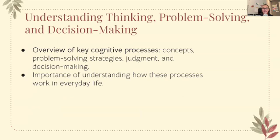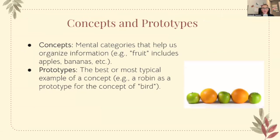We're going to start off with concepts and prototypes. Concepts are mental categories that help us organize information — for example, fruit includes apples, bananas, and oranges. Prototypes are the best or most typical example of a concept; for example, a robin as a prototype for the concept of bird. It's like we think of that as what a bird is.